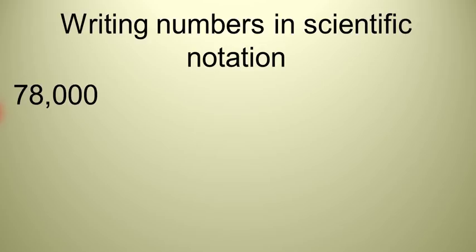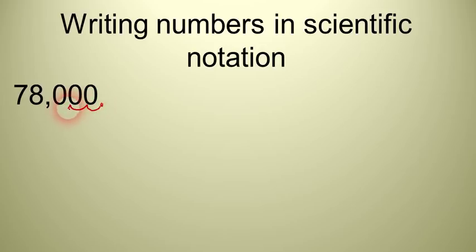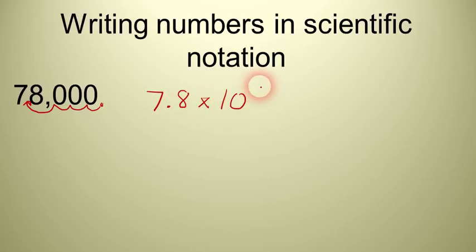Here's the first example: we have 78,000. We start with the decimal point, which is understood to be right there, and we're going to move it so that the mantissa is in between 1 and 10. We move it to the left: 1, 2, 3, 4 places. Our mantissa is 7.8, so the answer is 7.8 times 10 to the 4th. Notice it's positive 4 because this is a big number — 78,000 is much greater than 1.